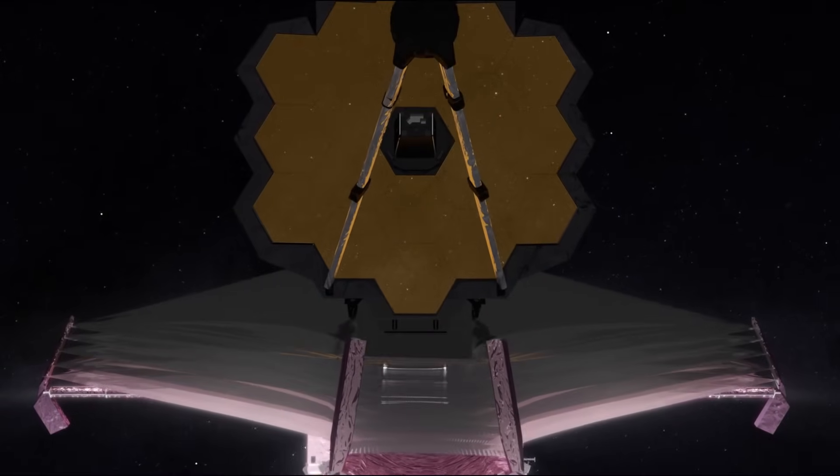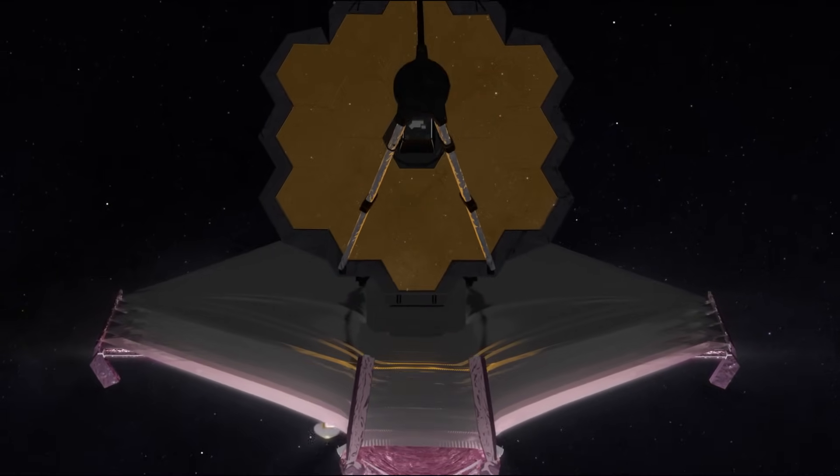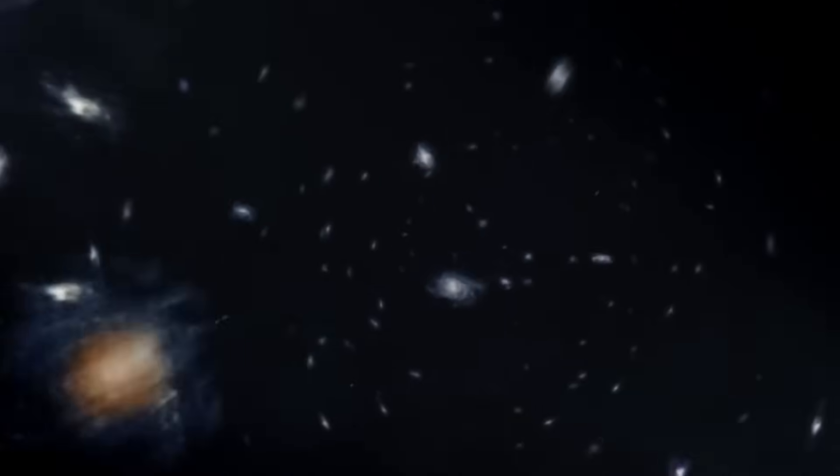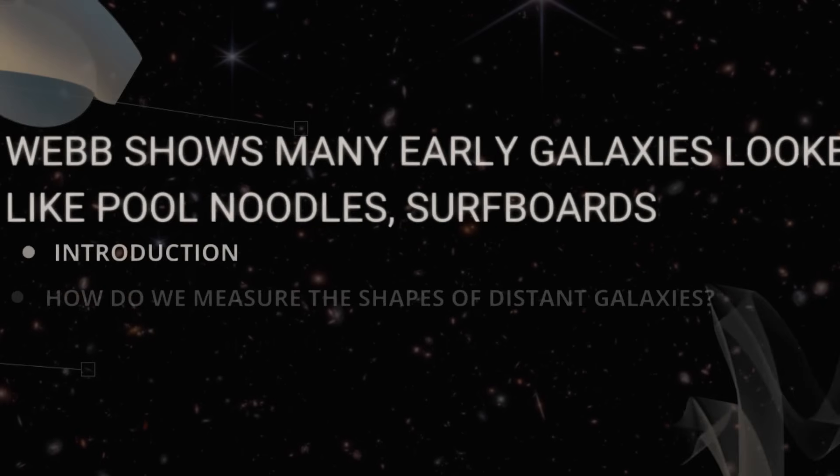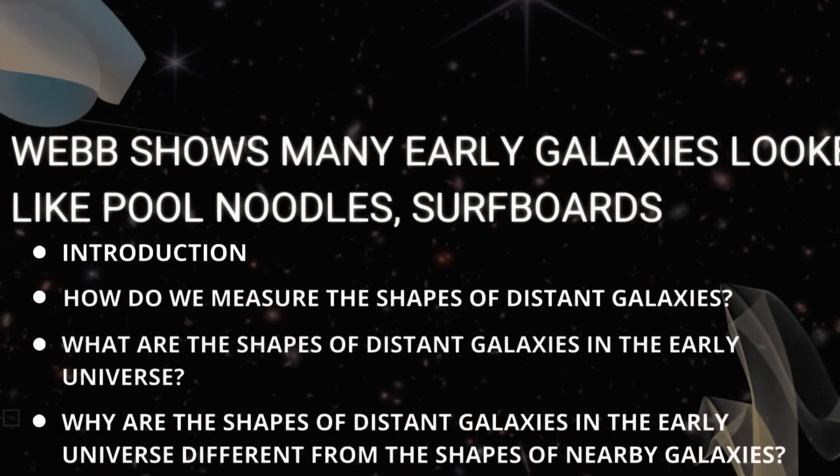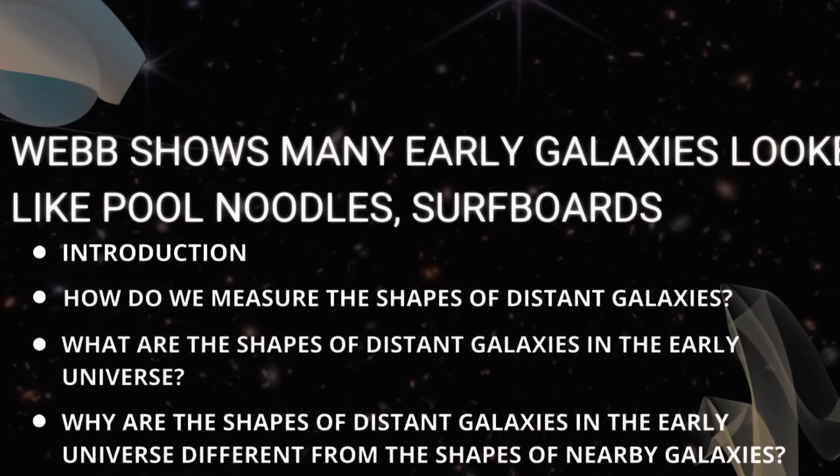NASA's James Webb Space Telescope has a new and surprising discovery that sheds light on the shapes of distant galaxies in the early universe. In this video, we will explore this new discovery and what it means for our understanding of the history and diversity of galaxy formation.